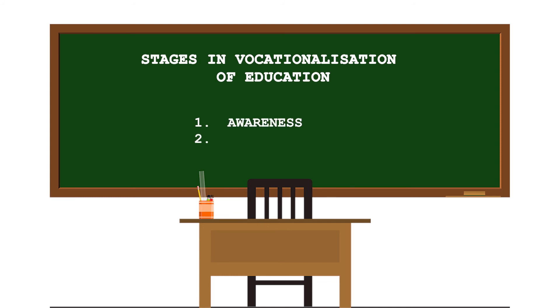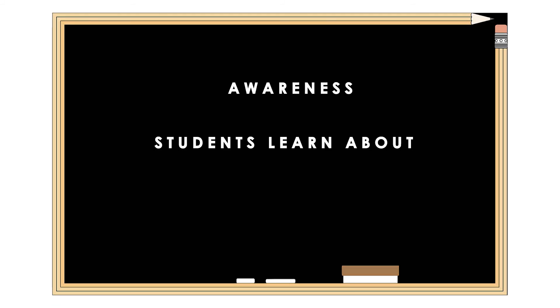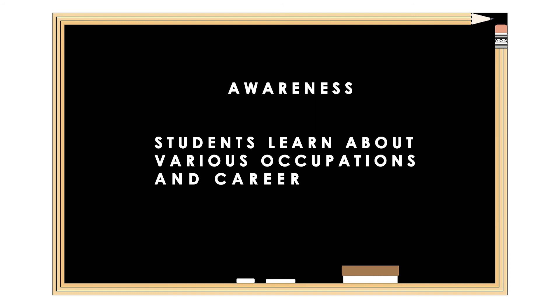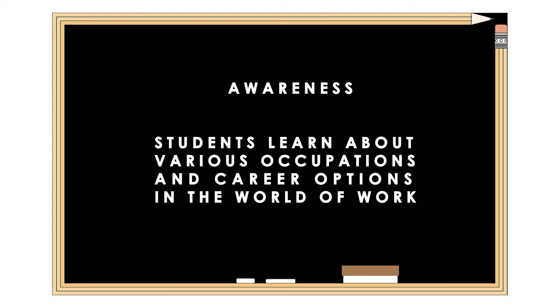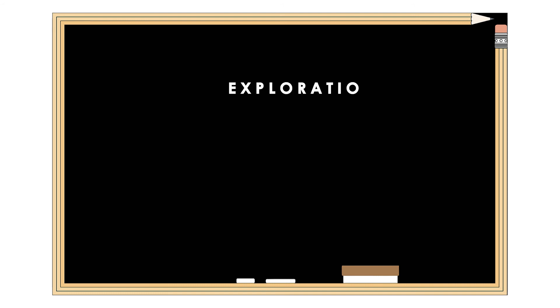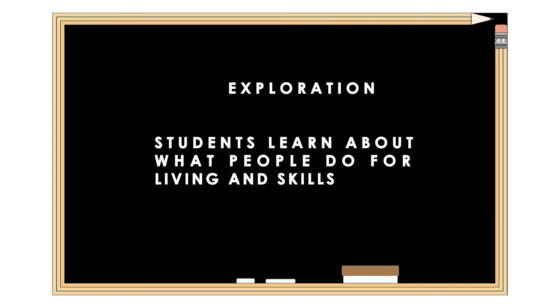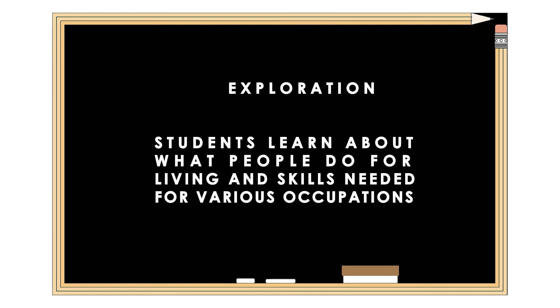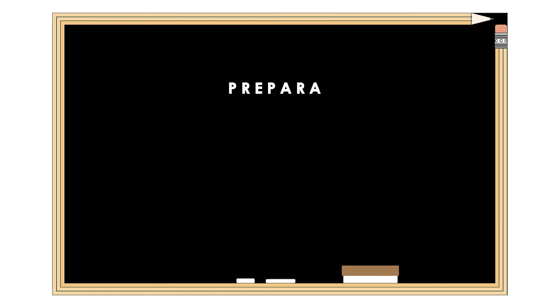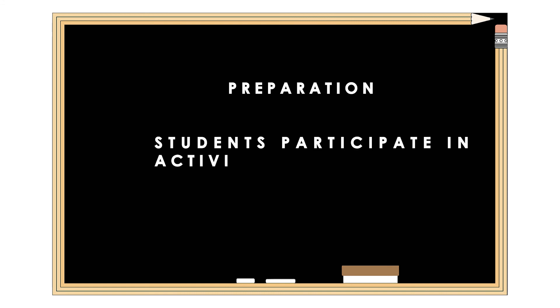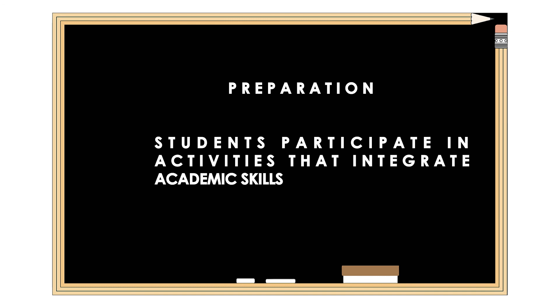The three stages are: awareness, exploration, and preparation. In the awareness stage, students learn about various occupations and career options in the world of work. In the exploration stage, students learn about how people make a living and the skills needed for various occupations. In the preparation stage, students participate in activities that integrate academic skills with vocational skills.